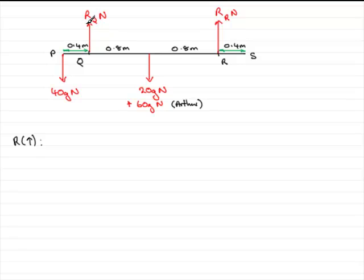So if we resolve upwards, we've got RQ plus RR and then we've got these two forces acting downwards in the negative sense then, so we've got minus 40g and, well we might as well total these, this is 80g, so we've got minus 80g and because the bench is in equilibrium, the overall resultant force must be zero.